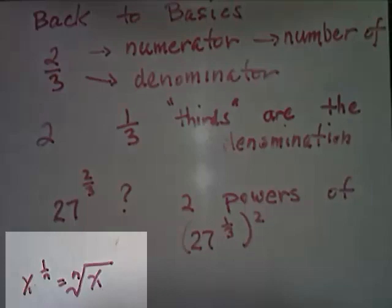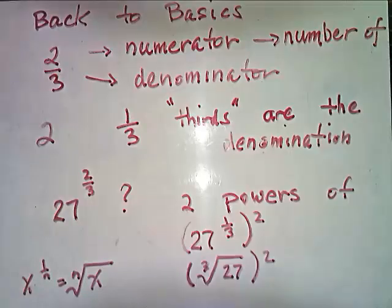Recall that x to the 1 over n is the nth root of x. So that means 27 to the 1 third power is the third root of 27.